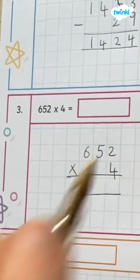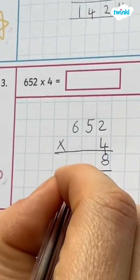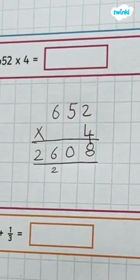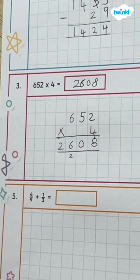Question 3 is a multiplication written method. Just multiply the digits starting from the smallest value in order, and carry over or regroup any digits that go over 10.